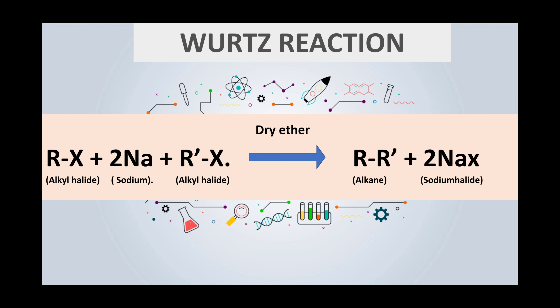So this is the reaction. Two molecules of alkyl halide react with two sodium atoms in the presence of dry ether — it gives alkane and sodium halide. Now in place of X you can write chloro, bromo, iodo — any of the halogen group or any halide. And in place of R and R' you can write the alkyl group — alkyl means methyl group or ethyl group.